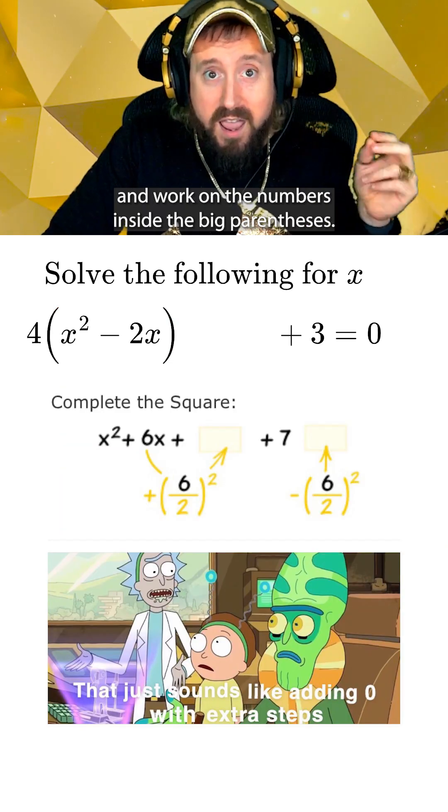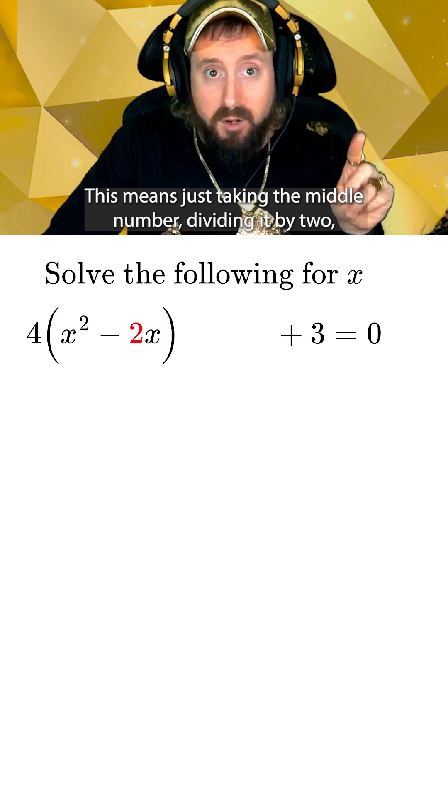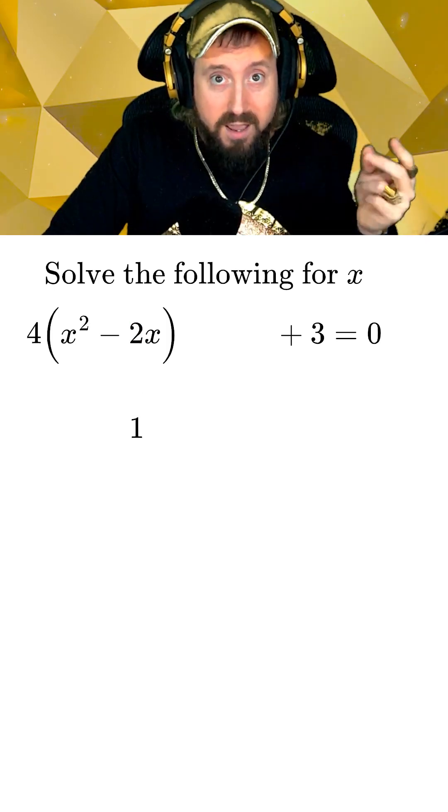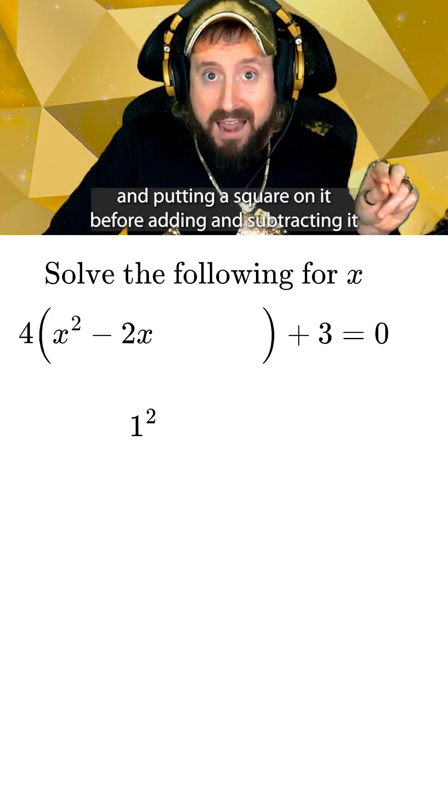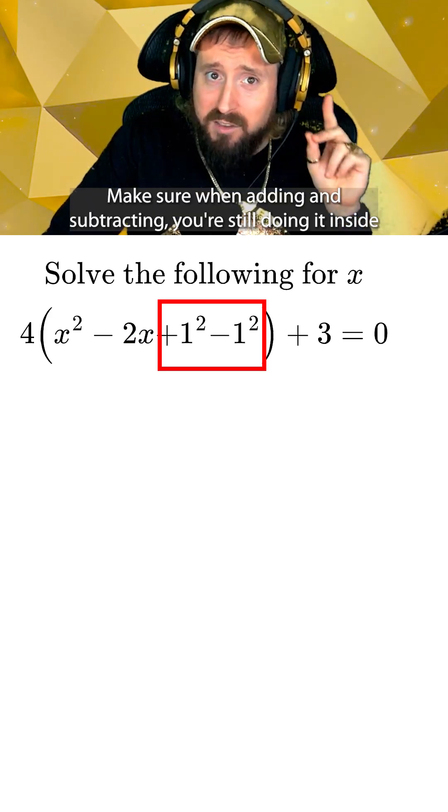Now we know the drill for completing the square and work on the numbers inside the big parentheses. This means just taking the middle number, dividing it by 2, and putting a square on it before adding and subtracting it just a little bit over to the right. Warning, make sure when adding and subtracting,